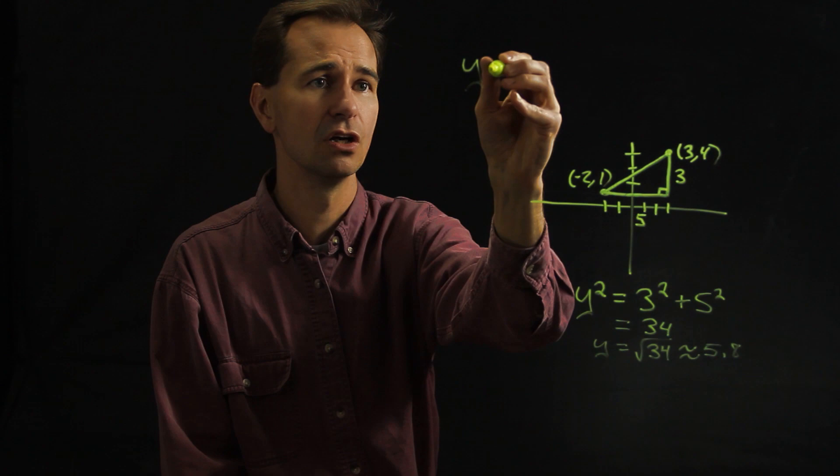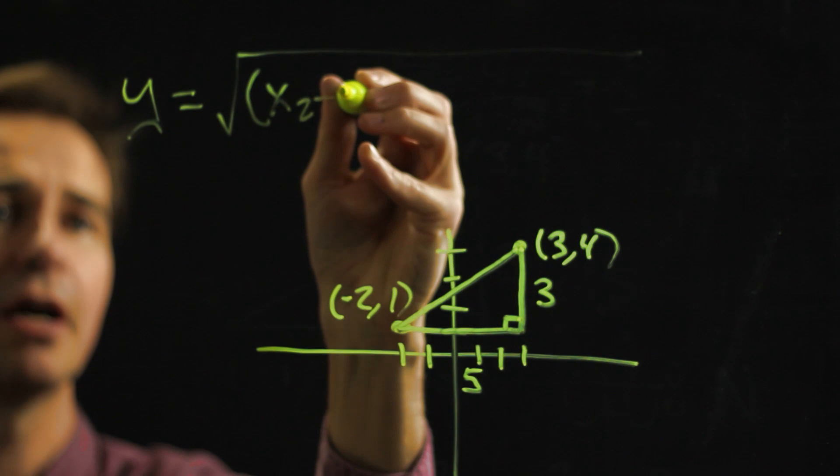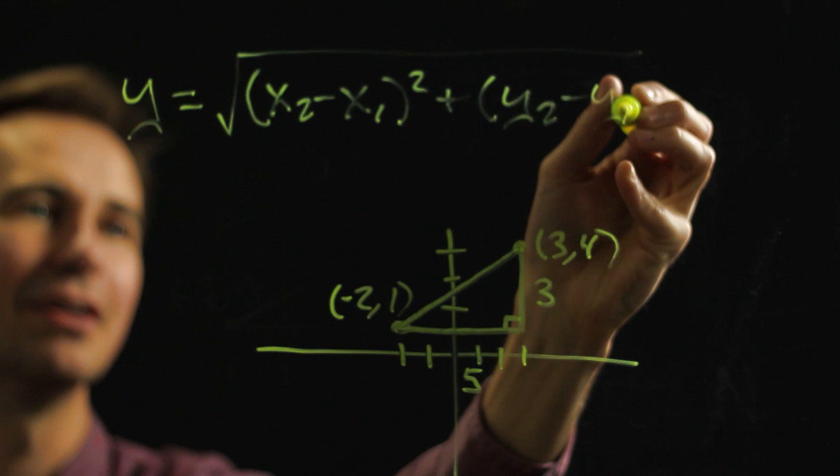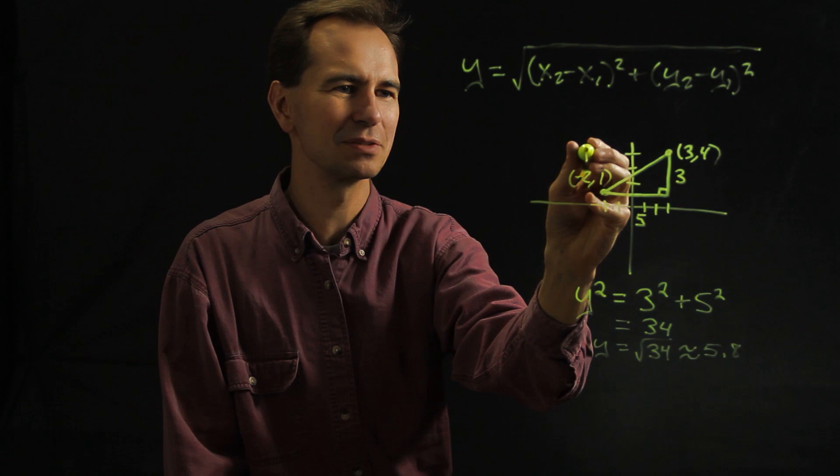Sometimes you see an equation in textbooks that looks like this: y equals the square root of x2 minus x1 squared plus y2 minus y1 squared. Let's see if we can make that darker. So this is just another way of saying exactly what we did.